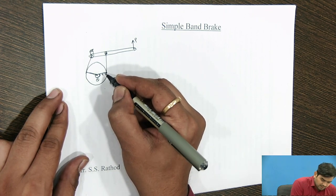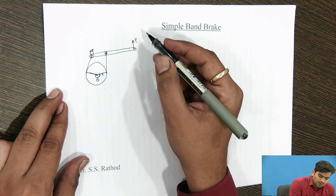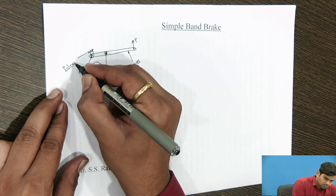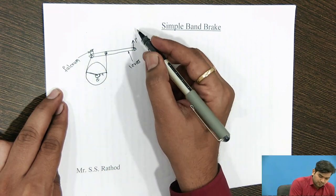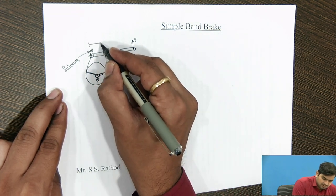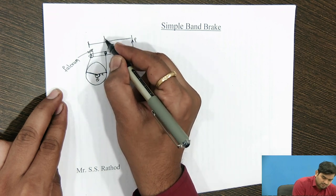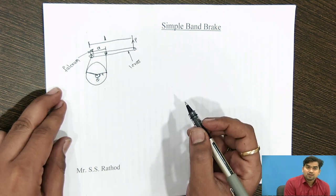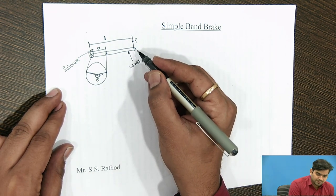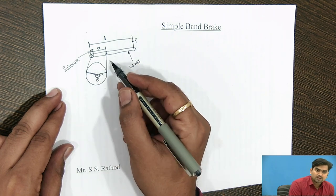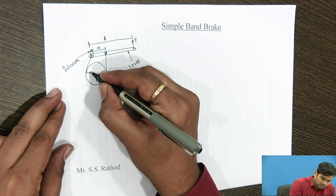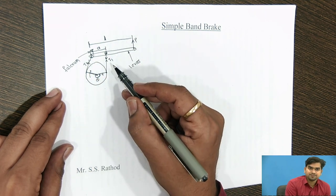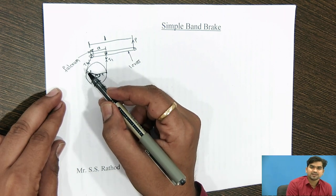This is the radius R, that is the radius of the drum. This is the lever, and this is the fulcrum. The force P is applied in the upward direction. The distance of the lever is written by the letter L, and the distance from the fulcrum to the pin is written by the letter A. When we apply force at one end of the lever in the upward direction, tension is created in the rope or band. If the drum rotates in the clockwise direction, the tension T1 acts on the tight side and T2 is the tension in the slack side.